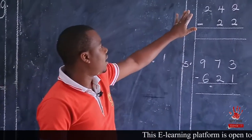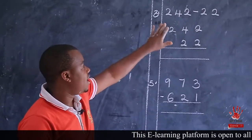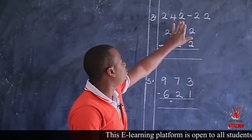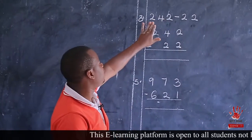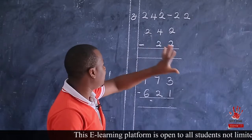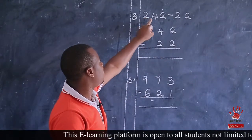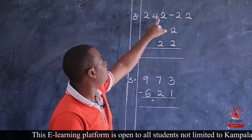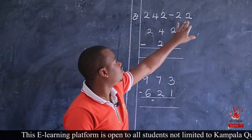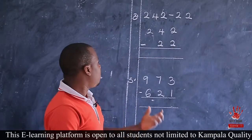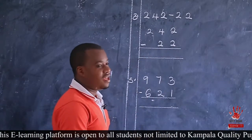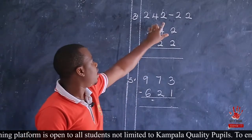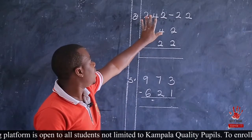I selected number three and number five. Number three had subtraction of a two-digit number from a three-digit number. So this is 242 take away 22. You realize this one has three digits and this one has two digits. We still arrange vertically, and when arranging, we follow place values. We know this is ones, tens, and hundreds.